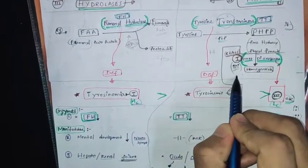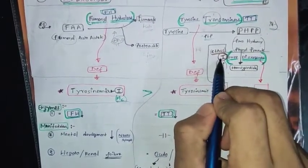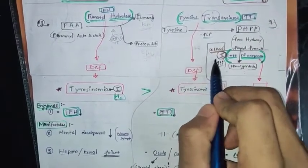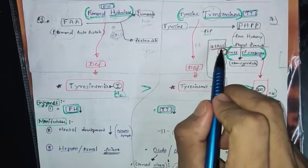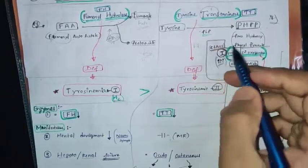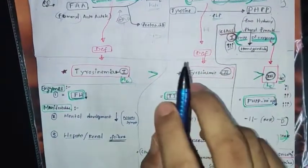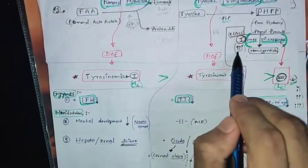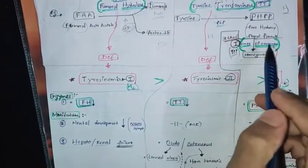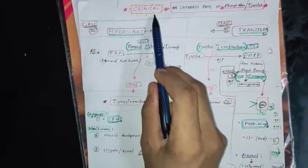Now for Class 1, this is the third example: PHPP dioxygenase. In Class 1, in the subclass of oxygenase, we have mono-oxygenase and di-oxygenase. Previously I discussed two examples of dioxygenase: homogentisate dioxygenase and tryptophan dioxygenase. Now the third example is PHPP dioxygenase. This is clinically very important — when these enzymes are deficient, we get specific diseases.